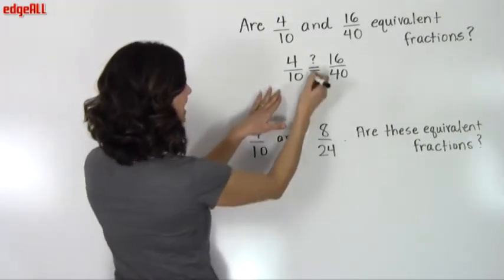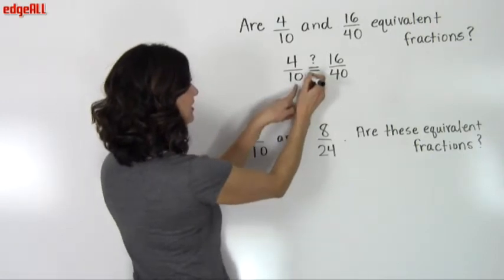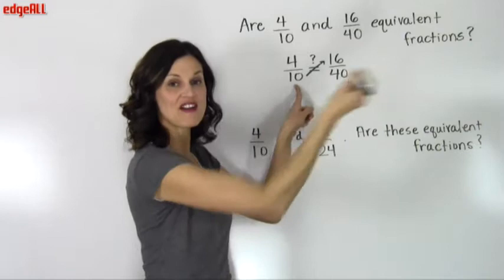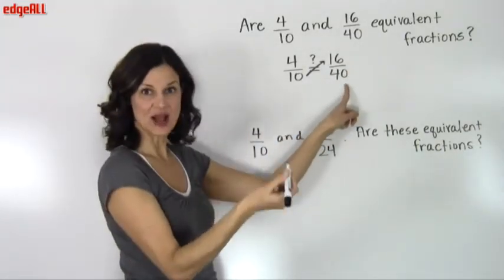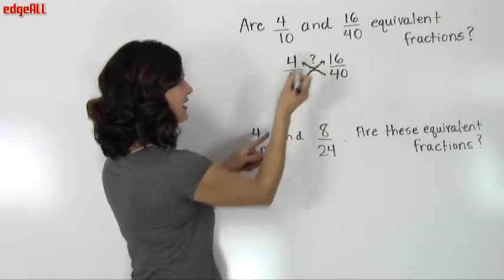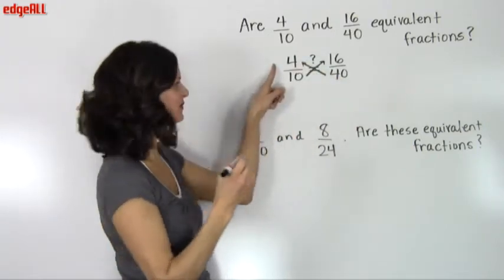I want to start out by taking the denominator of one fraction and multiplying it by the numerator of the other. And then I take the denominator of my second fraction and multiply it by the numerator of the other.